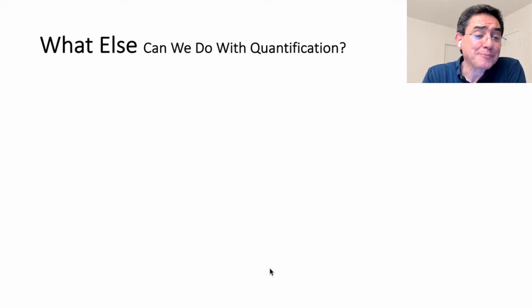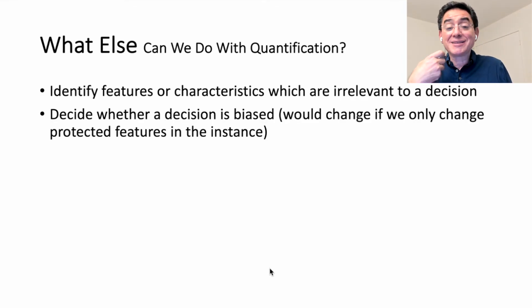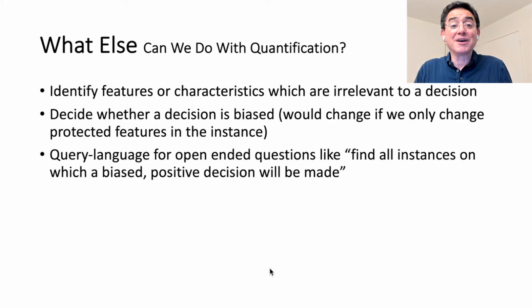What else can be done with quantification? Quite a bit, actually. You can identify features or characteristics that are irrelevant to a decision by evaluating a quantified Boolean formula. You can decide whether a decision is biased by evaluating a quantified Boolean formula. In fact, we show in the paper, in addition to these things, that quantification together with logical connectives gives you a query language for phrasing open-ended queries,